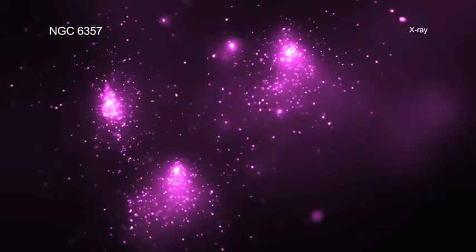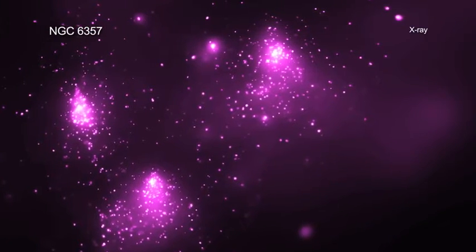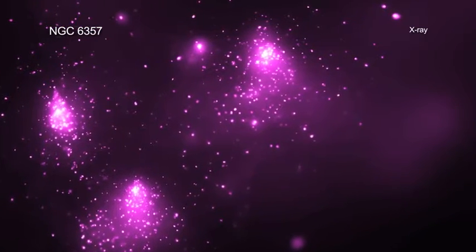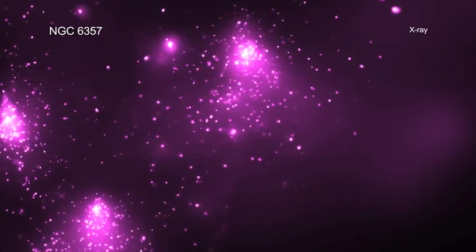X-ray data from Chandra and Rosat reveal hundreds of point sources, which are the young stars in NGC 6357, as well as diffuse X-ray emission from hot gas.